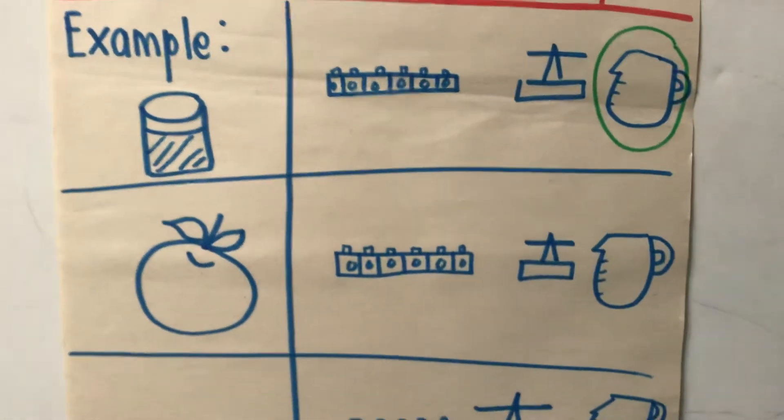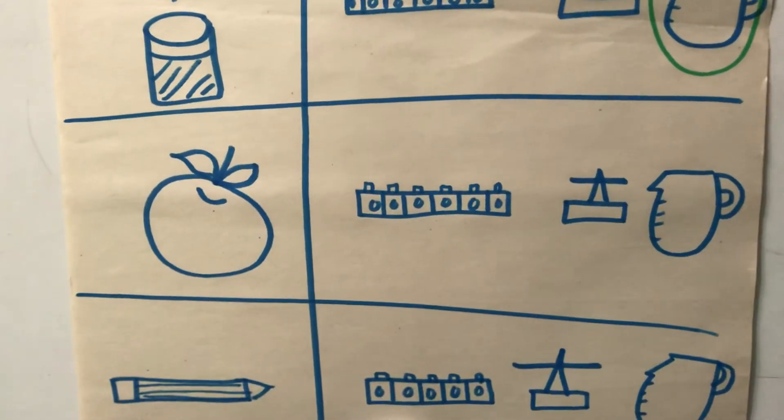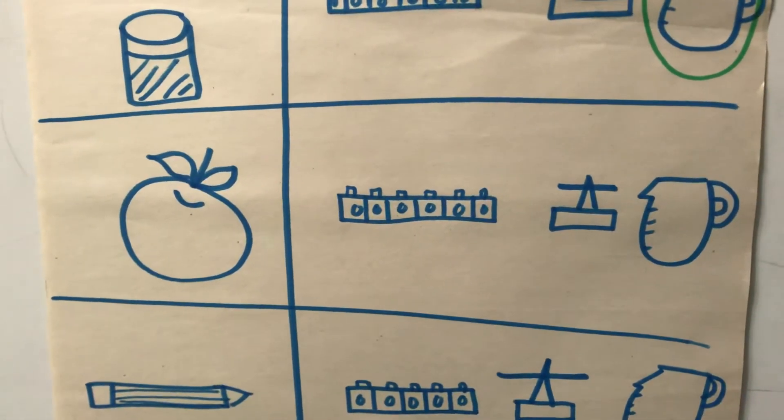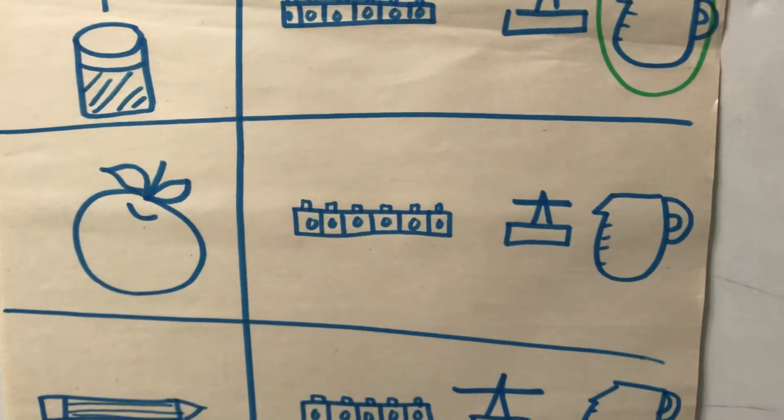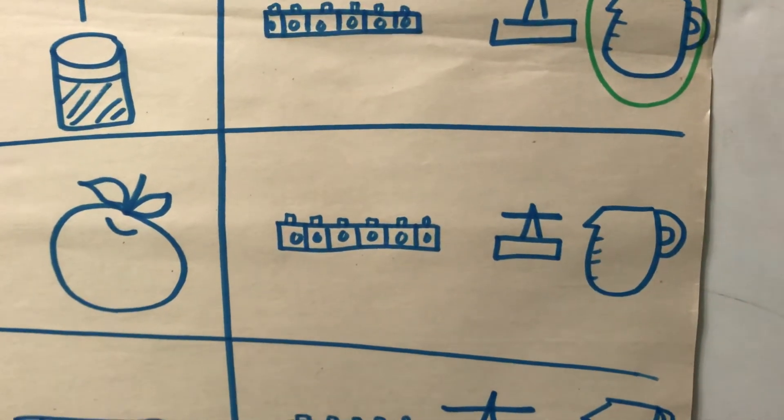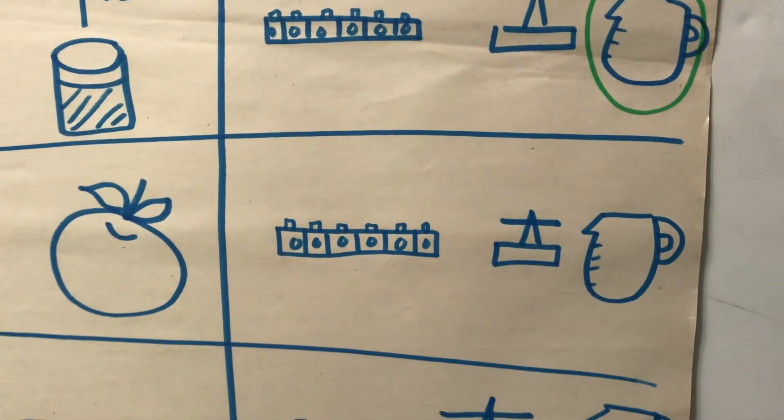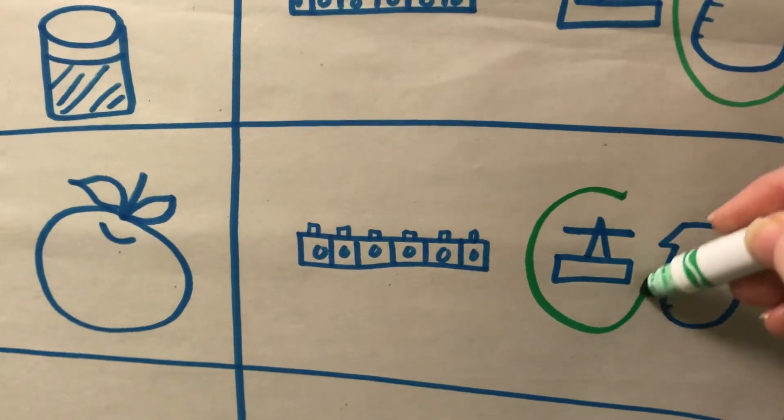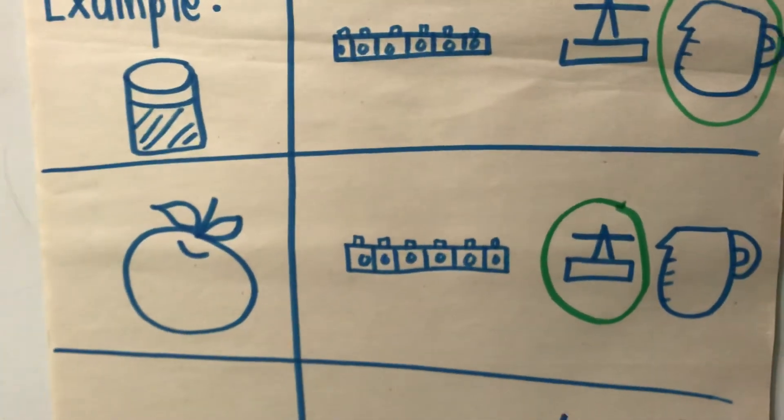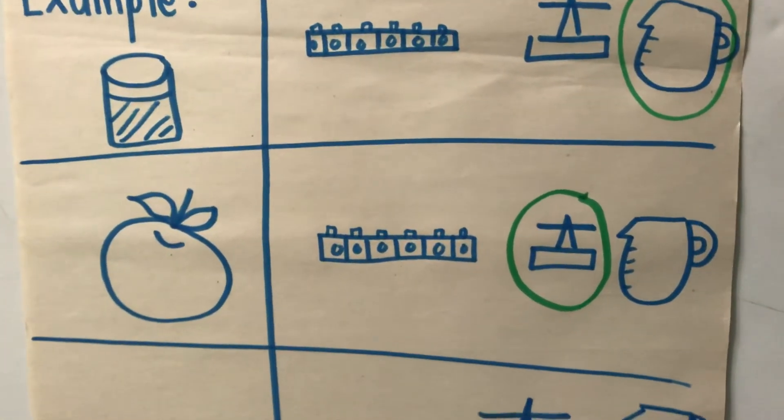Let's look at the next one. An apple. Would we want to measure it with cubes? No, that's not the best one. Would we use a scale or a measuring cup? You're right, we're going to use a scale. If we want to see how heavy an apple is, the best tool to use is a scale.